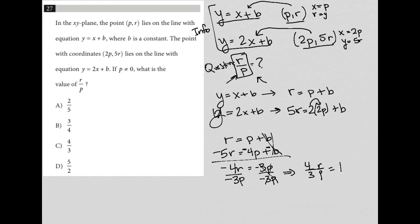Now, I don't want 4 thirds or I don't want 4r over 3p. I want just r over p. So if I multiply now both sides by the reciprocal, by 3 fourths, now the 3s cross-cancel, the 4s cross-cancel. And I'm left with r over p is equal to 3 over 4. And therefore, my correct answer here is choice B.